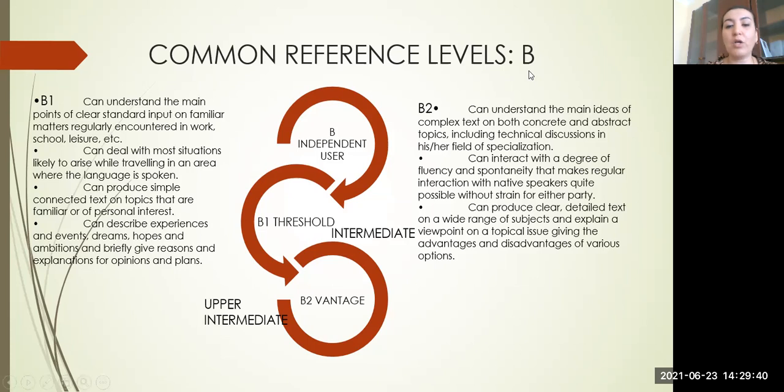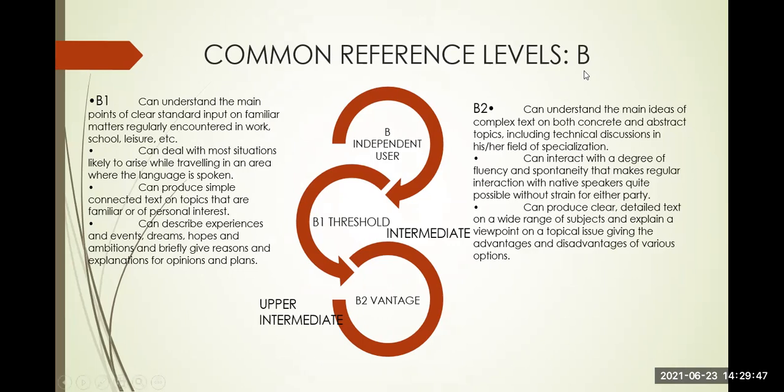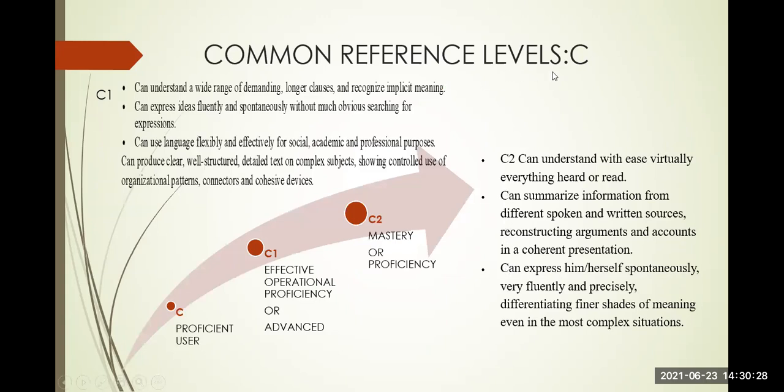B2 language learner is called vantage. B2 language learner can understand the main ideas of complex text on both concrete and abstract topics, including technical discussions in his field of specialization. B2 language learner can interact with a degree of fluency and spontaneity that makes regular interaction with native speakers quite possible without strain for either party. B2 language learner can produce clear detailed text on a wide range of subjects and explain a viewpoint on topical issues, giving the advantages and disadvantages of various options.